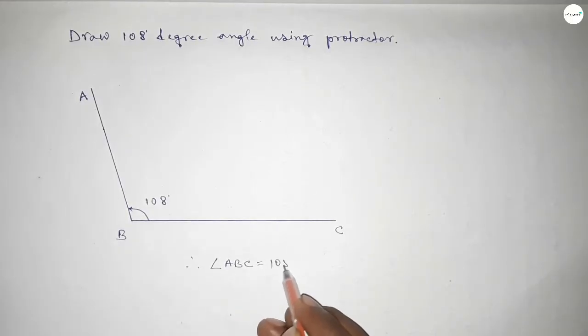Angle ABC equals 108 degrees. That's all, thanks for watching. If this video is helpful to you, please share it with your friends. Thanks for watching.